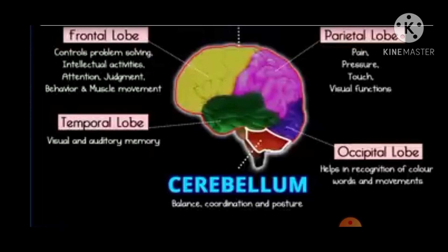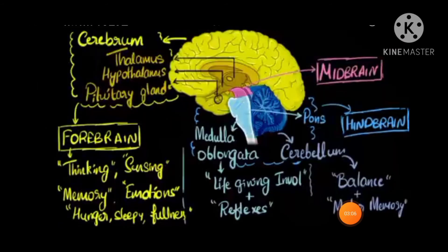The frontal lobe controls problem solving, intellectual activities, attention, judgment, behavior, and muscle movement. The temporal lobe, shown in green, is related to visual and auditory memory. The parietal lobe is related to pain, pressure, touch, and visual functions. The occipital lobe helps in recognition of color, words, and movements. This way the function of the forebrain and cerebrum is carried out with the help of these four lobes.